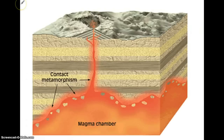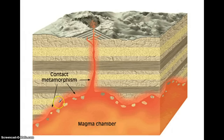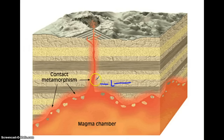Here's another diagram showing the same process. We have a magma chamber underground — very hot magma. In the pinkish area, they're showing contact metamorphism. Suppose that the gray layer here was limestone. When the magma heats up this area, it's so hot that the limestone is going to change into marble — into the metamorphic rock marble.